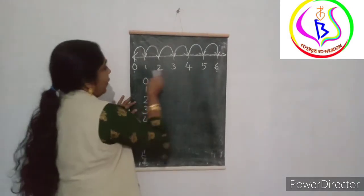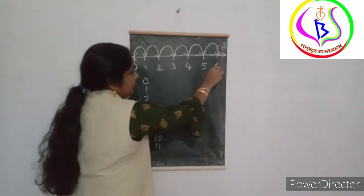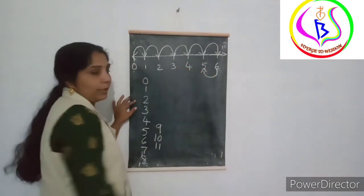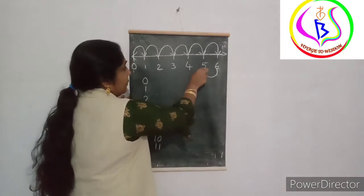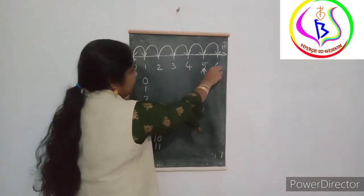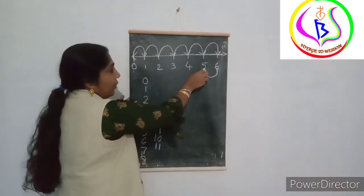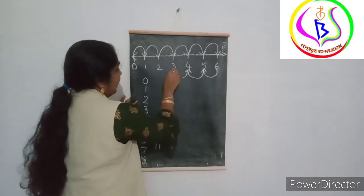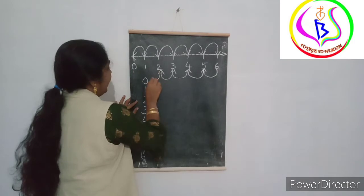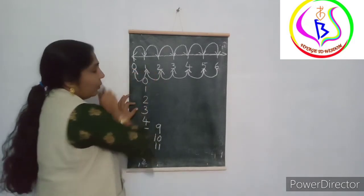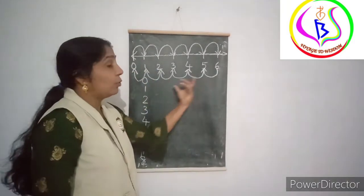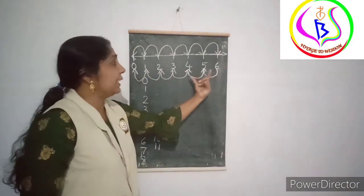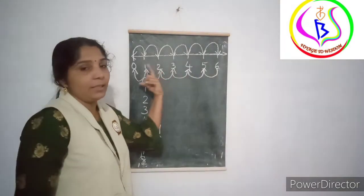This is also a number line. From 6 we go backward. We move backward from 6, then 5, then 4, then 3, then 2, then 1, then 0. So this is backward counting. That is decreasing order.